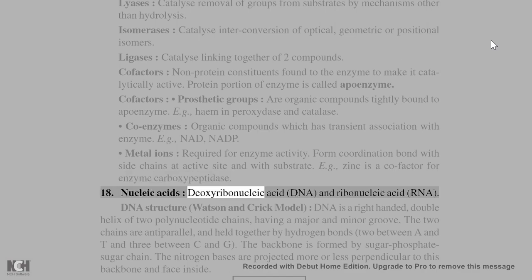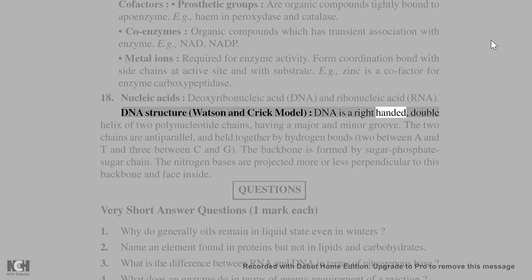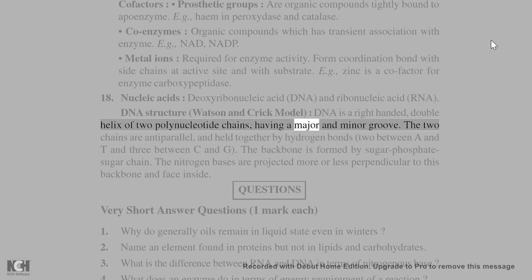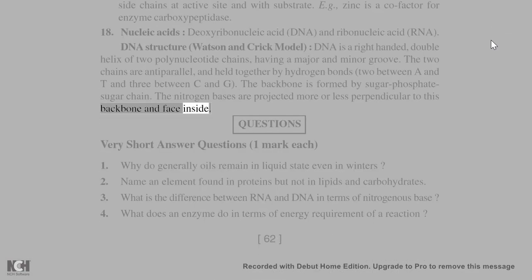18. Nucleic acids: deoxyribonucleic acid (DNA) and ribonucleic acid (RNA). DNA structure: Watson and Crick model. DNA is a right-handed, double helix of two polynucleotide chains, having a major and minor groove. The two chains are anti-parallel, and held together by hydrogen bonds, two between A and T and three between C and G. The backbone is formed by sugar-phosphate-sugar chain. The nitrogen bases are projected more or less perpendicular to this backbone and face inside.